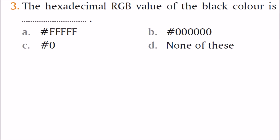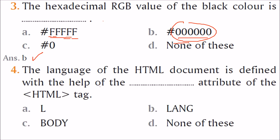The hexadecimal RGB value of black color — black is 000000, white is FFFFFF. All colors are in between: FFFFFF is white and 000000 is black. So the answer is B — black is 000000.